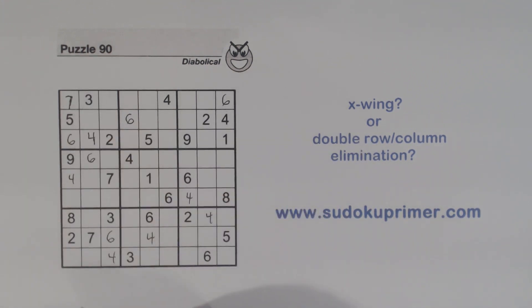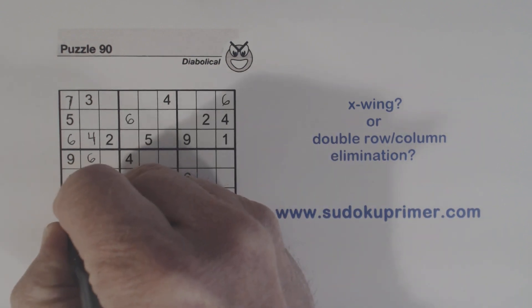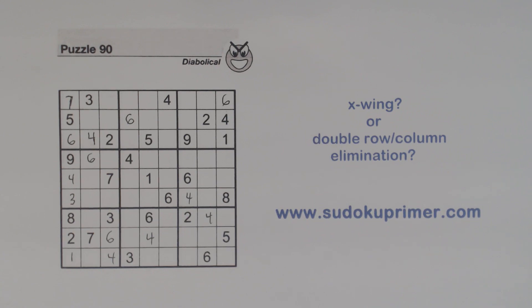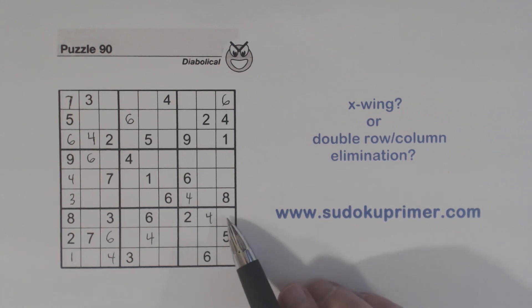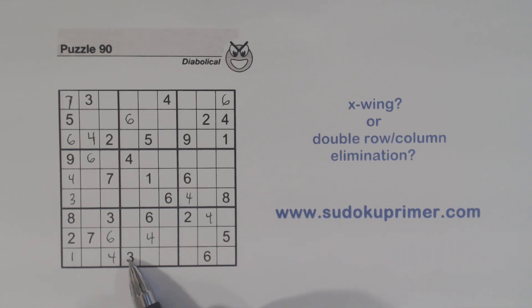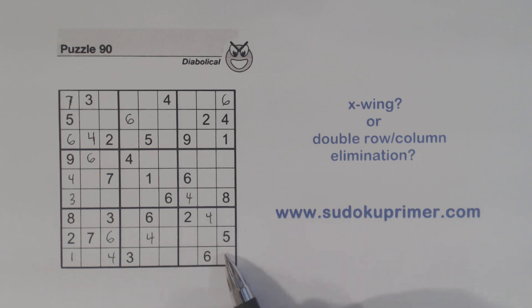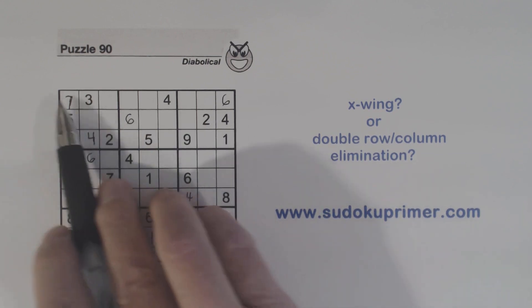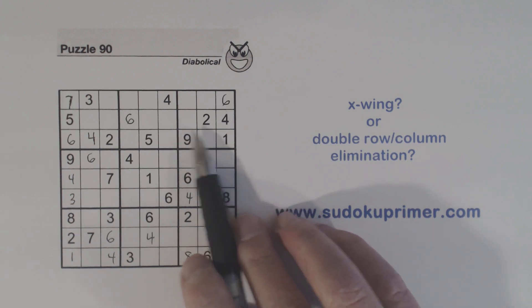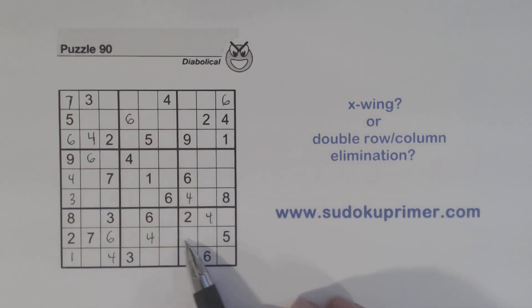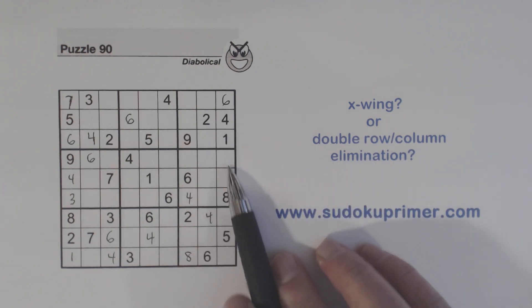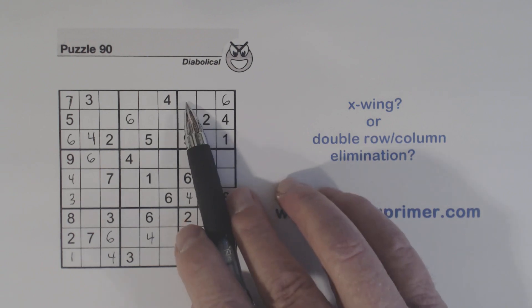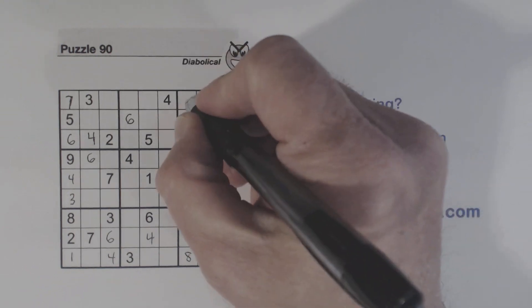Now we've only got 2 numbers left in column 1 here, and that's a 1 or a 3. There's a 3 there, so we can fill those in. Now if you remember we had 7-9 twins here. We have a 1 and a 3 in row 9 already, so we know these are 1-3 twins here. We have 7-9 twins there, so there's only one number left there and that's an 8. And now with this 7, we have 3-7 twins here. If you remember our 3 from the beginning with our double column elimination — that means 3, 7 here, so we have 5-8 twins here. We've got an 8 there, so we can fill those in.